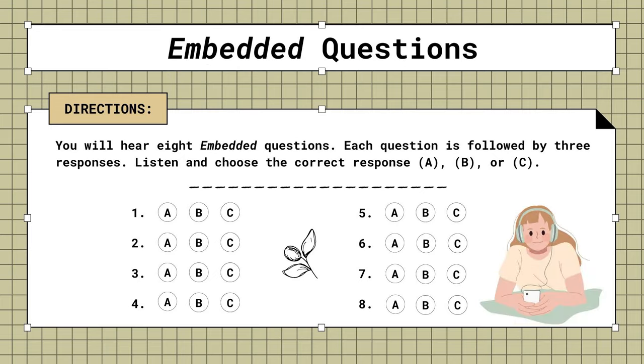Mini-test. Embedded questions. You will hear eight embedded questions. Each question is followed by three responses. Listen and choose the correct response. A, B, or C.